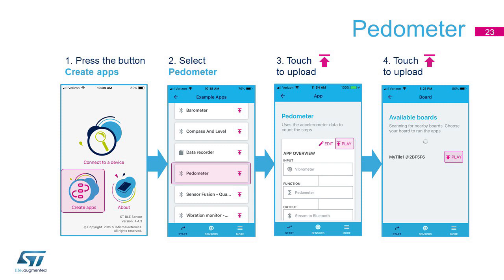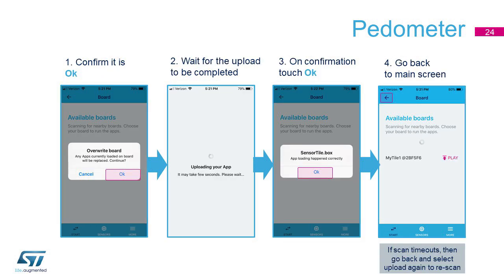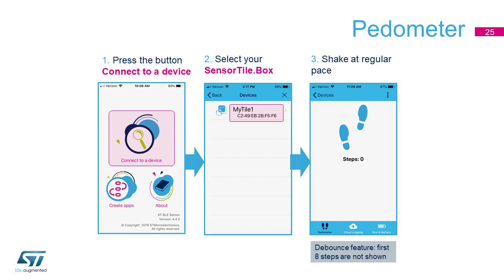Another useful pre-recorded example is the pedometer. It counts steps when the SensorTile.Box is attached to the belt. To activate it, as with the other examples, go to the Create App screen and upload it in the usual way. Accept to overwrite the previous app and connect to your SensorTile.Box to run it. Please note the best accuracy is achieved when the box is applied to the belt. The first eight initial steps are not immediately shown to remove possible false steps.